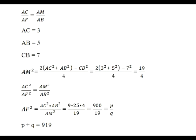The formula for the median of triangle ABC AM is AM squared equals 2 times AC squared plus AB squared minus CB squared over 4. Since we know the length of all three sides, we can calculate AM squared. Then, if we square both sides of the equation, the result is that AF squared equals 900 over 19. Since these two numbers are relatively prime, we can calculate the sum P plus Q equals 919.